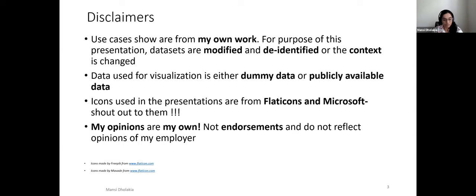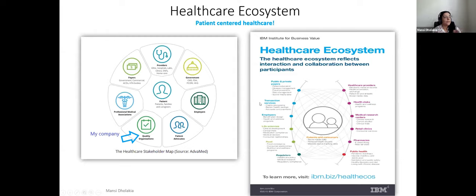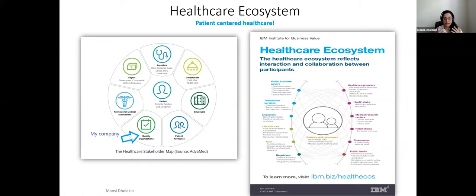Healthcare is a broad ecosystem with the patient at the center, and on the periphery are providers, payers, professional associations, quality organizations, patient advocates, employers, and governments. Alliant falls under the quality organization bucket and is funded by CMS. A more granular view from IBM shows the domains and subdomains that contribute to healthcare.